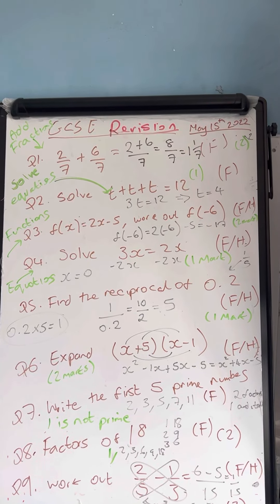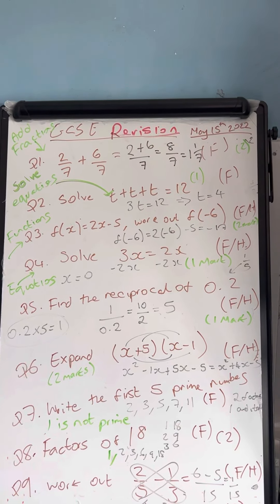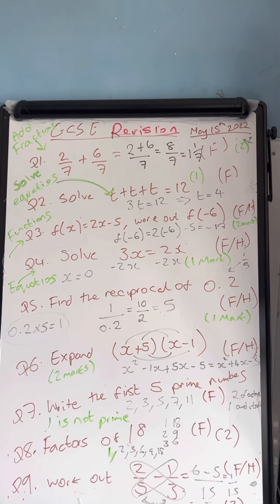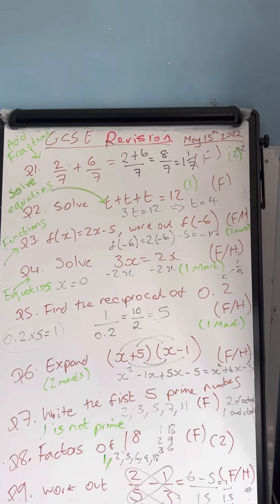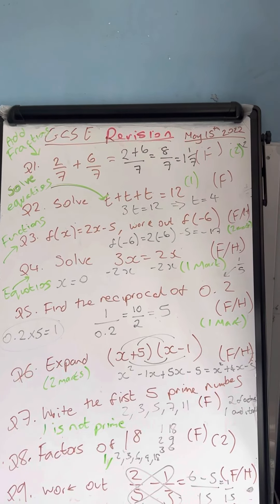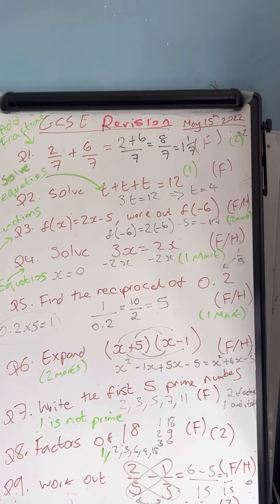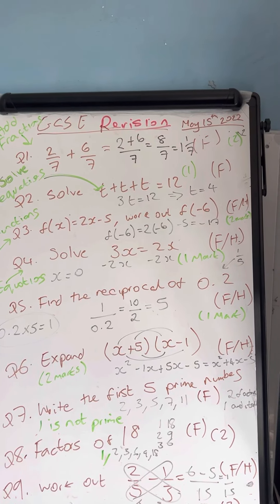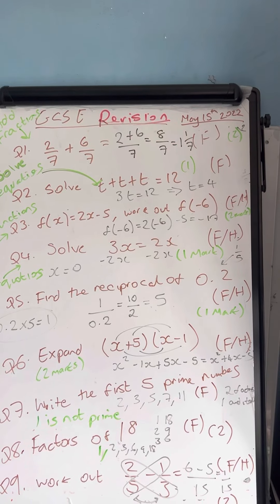This is question number three. F of X is equal to 2X minus 5. Work out F of minus 6. We substitute in negative 6 into the function, so we get two lots of negative 6, subtract the 5. Two lots of negative 6, so 2 times negative 6 is negative 12. Negative 12, subtract the 5, is negative 17. So F of minus 6 is equal to negative 17.